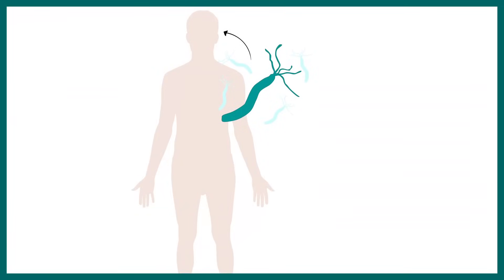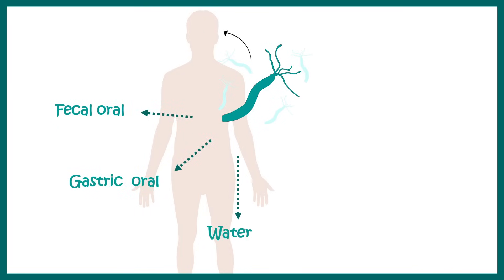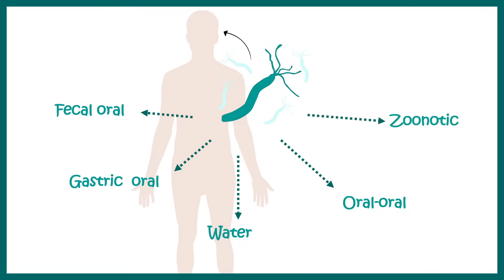Let's talk about the transfer route of Helicobacter pylori. It could be fecal-oral, gastric-oral, or waterborne, and in rare cases it could be oral-oral or zoonotic-mediated transfer.